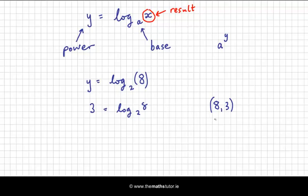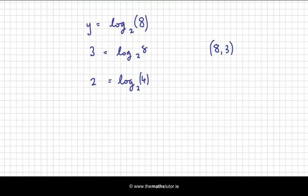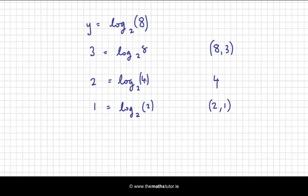Now what are the other powers of 2? Well, 2 squared gives us 4, so if we substitute 4 in for x, that gives us a y of 2. 2 to the power of 2 gives us 4. And what other powers of 2 are there? 2 to the power of 1 gives us 2. So when x is 2, y is 1 — that's an ordered pair of 2 and 1. And when x is 4, y is 2. So we've got quite a number of points here already in our function.